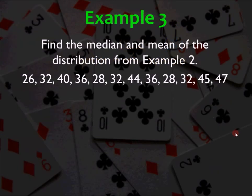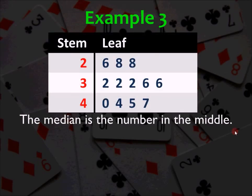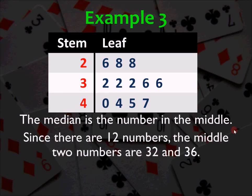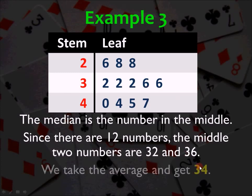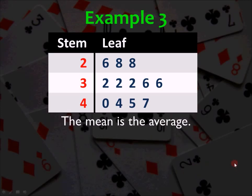Example 3, find the median and mean of the distribution of example 2. So you already made a stem plot for this, and the median is the number in the middle. So I'm going to give you a moment to do that. Go ahead and do the mean as well, and resume the video when you're ready. So, since there are 12 numbers, the middle two numbers are what we're going to be looking for, the 32 and the 36. Take the average of those two, and our median is 34. The mean is just the average, so you have to add up all 12 numbers and divide it by 12. So the sum happens to be 426, so the mean is 426 divided by 12, or 35.5.